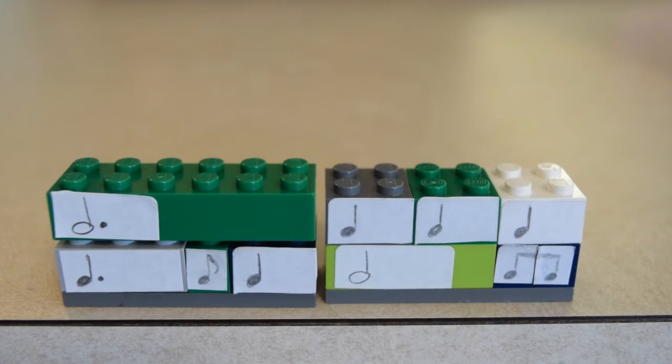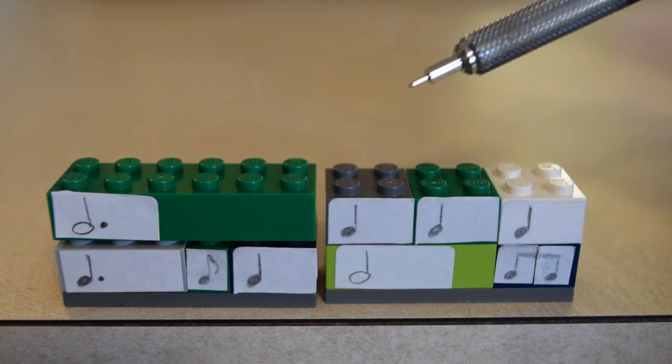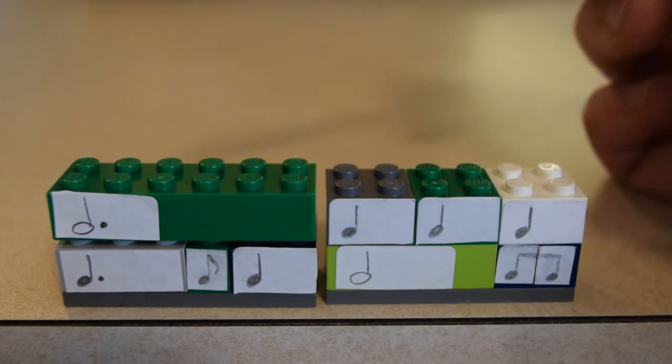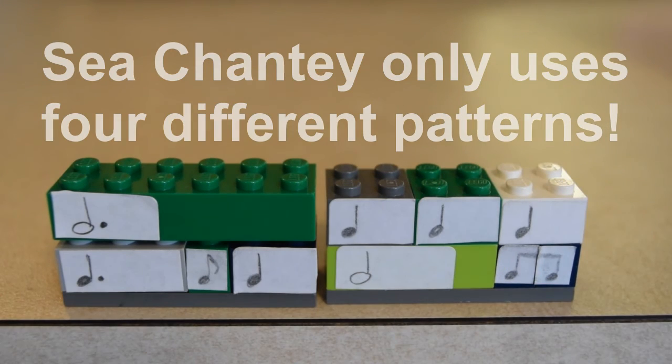So if you look through the entire tune of Sea Shanty, these are the only four measures that are used throughout the whole tune. You've got dotted quarter, eighth quarter. And that fourth measure, again, you've got half note, two eighth notes. Some measures you just have three quarter notes evenly across there. And then we have several measures that just have a dotted half note.